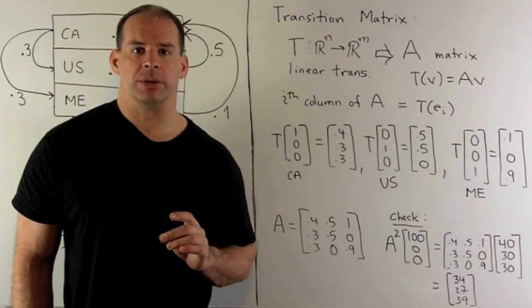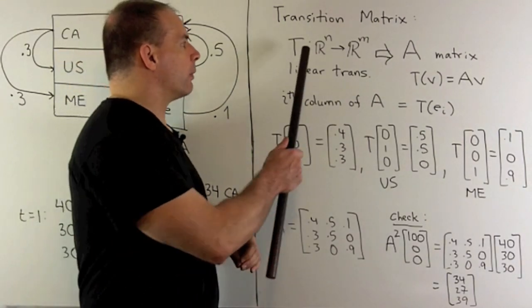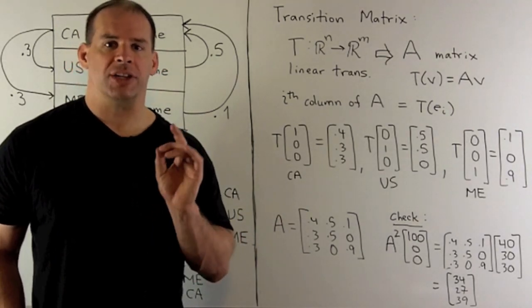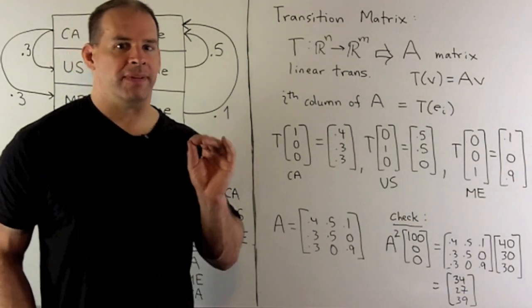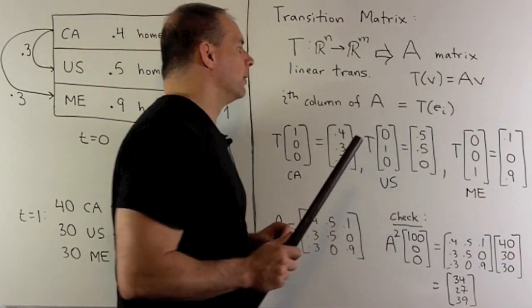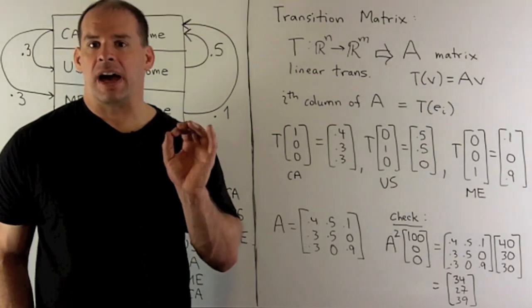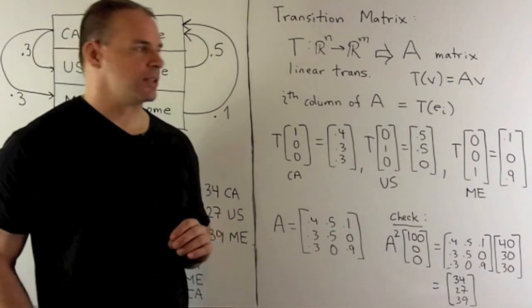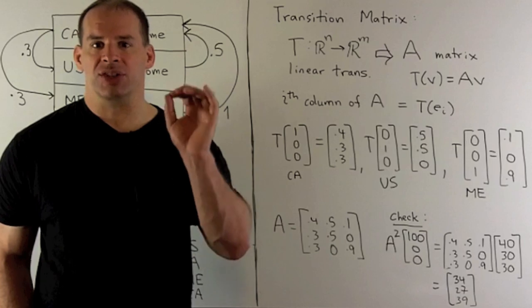How do we set up our transition matrix? Recall, if I have a linear transformation from R^n to R^m, I can represent that as matrix multiplication. That just means there's going to be some matrix A out there, so that if we evaluate T on the vector V, the answer is the same as taking our matrix A and multiplying by V. The recipe for A: if I want the i-th column of A, we just take our linear transformation and evaluate at the i-th standard basis vector.